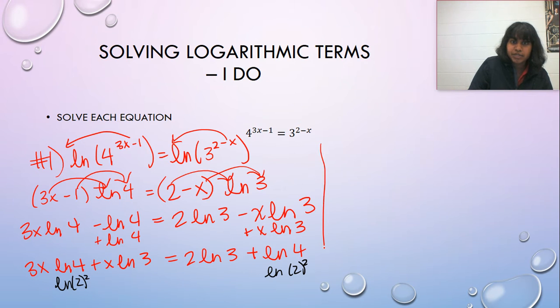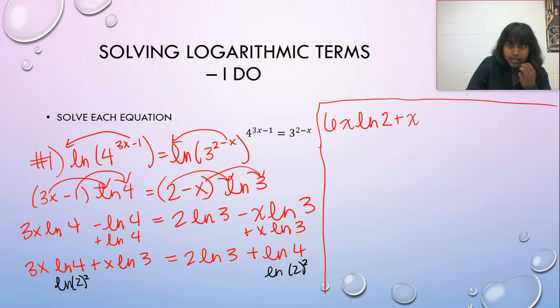So moving to this half of my screen, I end up with 6 times x times the natural log of 2 plus x natural log of 3 is equal to 2 natural log 3 plus 2 natural log 2.